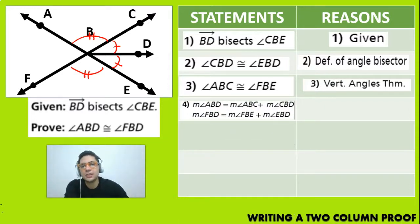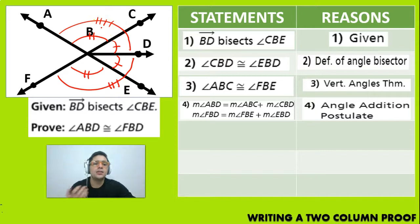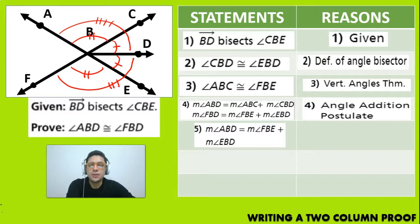Now, you know that the measurement of angle ABD and the measurement of the angle FBD are going to be equal to the sum of the next two angles. Right. So this angle right here, right, is going to have a measurement and then this one is going to have another measurement. Right. Why? Because the angle addition postulate we learned last time.